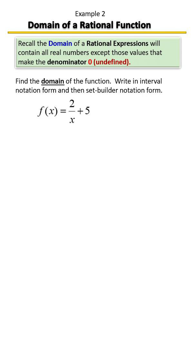So this process is very similar to finding the vertical asymptote. All you have to do is take the denominator and set it equal to zero.